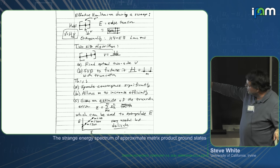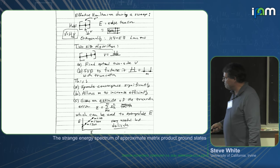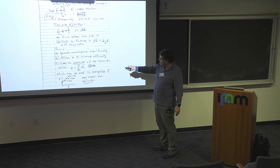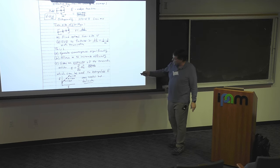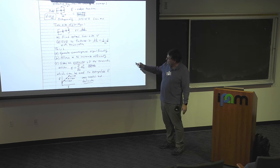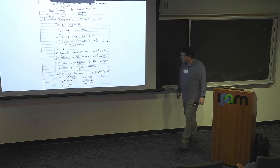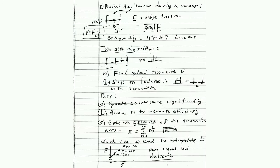This truncation has an extra vertical degree of freedom — it's like a 2M by 2M matrix that we're truncating. That's actually an advantage: it allows us to build up M, and importantly it gives us an estimate of the truncation error. I talked about the exact truncation error; this gives us an approximate surrogate for it, which is just the truncation error from this SVD during the middle of the algorithm. We can extrapolate in that truncation error, and it generally behaves linearly. It's an extremely useful part of the algorithm.